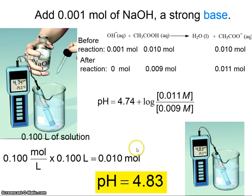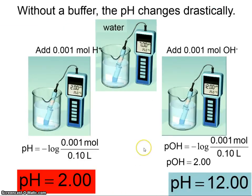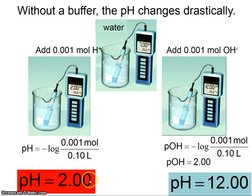What happens with plain ordinary water? If you have water at pH 7 and add 0.001 moles of H+ in 0.1 liters, the pH drops to 2 — that's a drop of 5 pH units. If you add 0.001 moles of OH⁻ to 100 mL, you get pOH of 2 or pH of 12. So adding just a little acid or base to an unbuffered solution drastically shifts the pH, whereas the buffer barely changed.